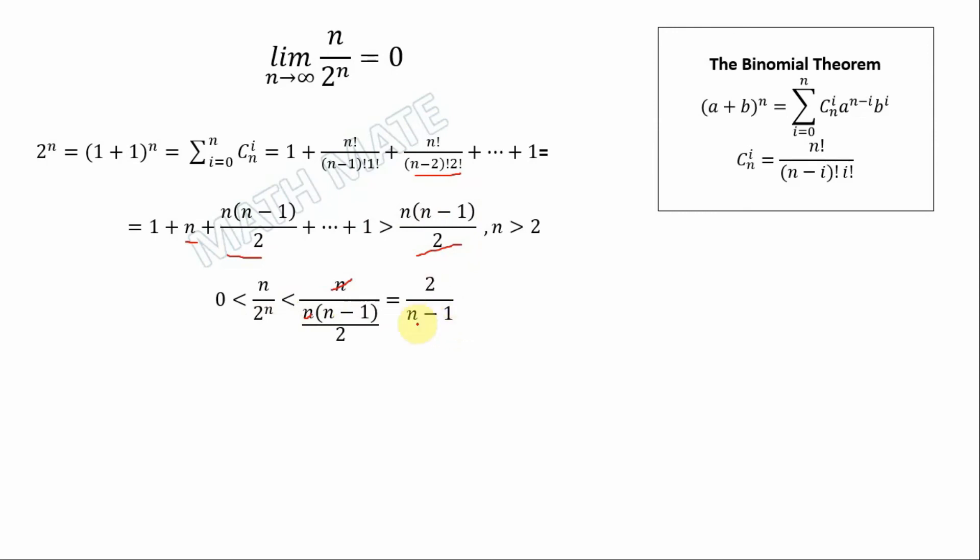So the limit of this fraction when n goes to infinity, this fraction goes to zero. So the limit from the left side and from the right side goes to zero, and from this we can make conclusions that this fraction also goes to zero when n goes to infinity.